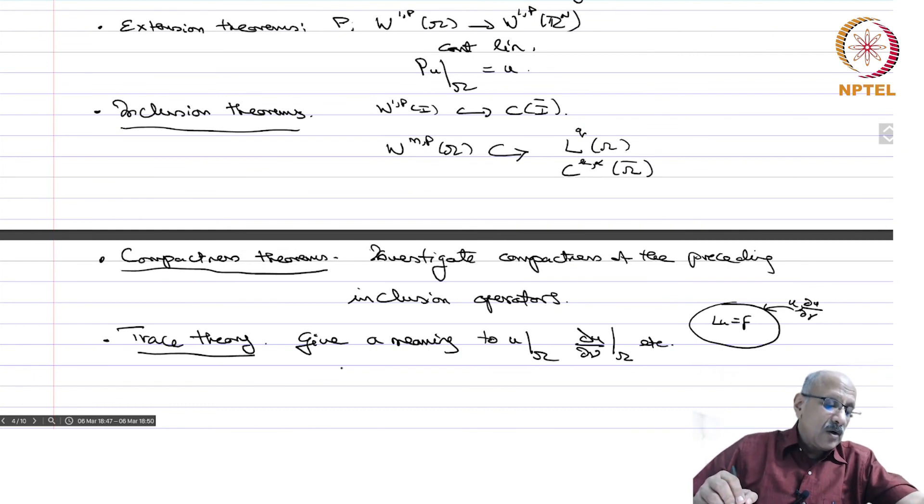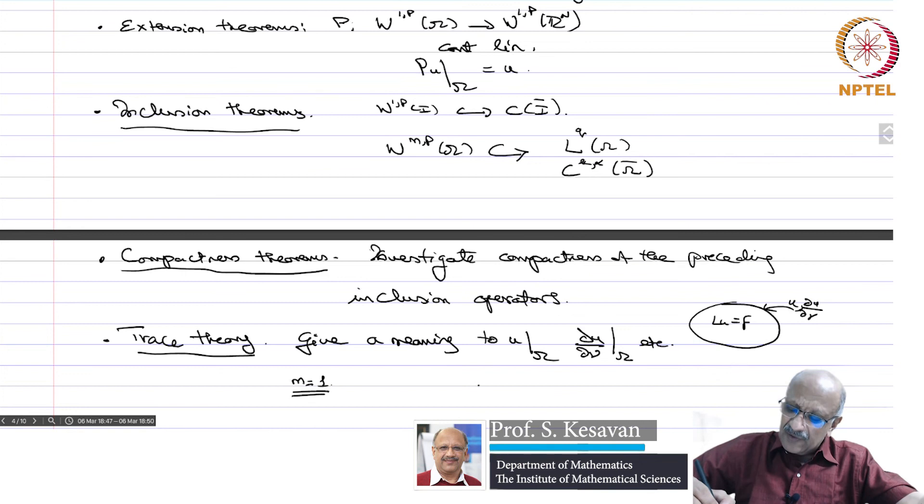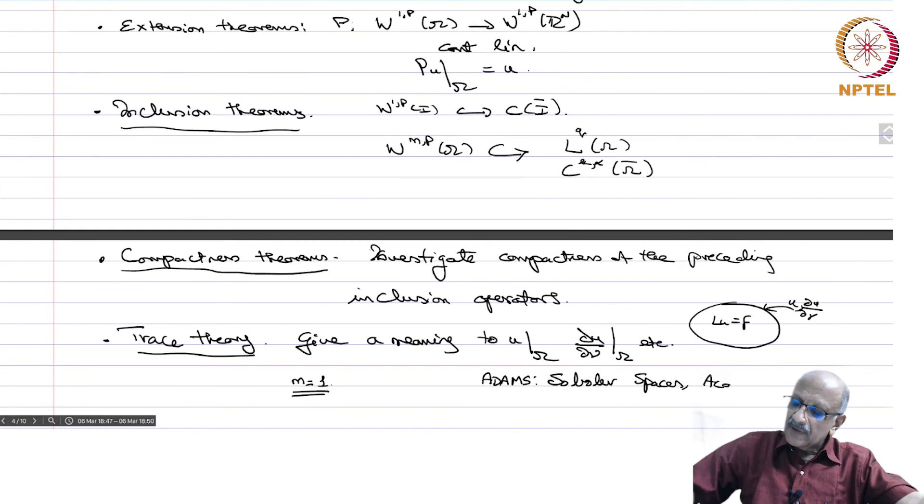We will mostly deal with m equals 1 because the expression is simple, and we will present the results in the simplest of cases. But a very comprehensive reference for this is Adams, Sobolev Spaces, Academic Press. But of course, I must warn you, or Maz'ya, also Sobolev Spaces, I think this is Springer. These are very difficult books to read.